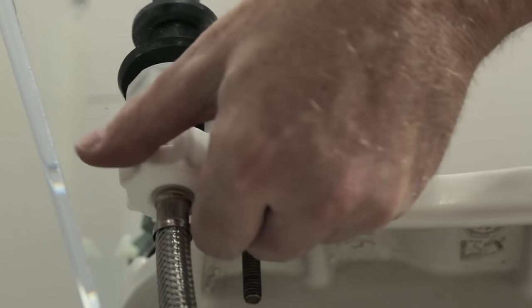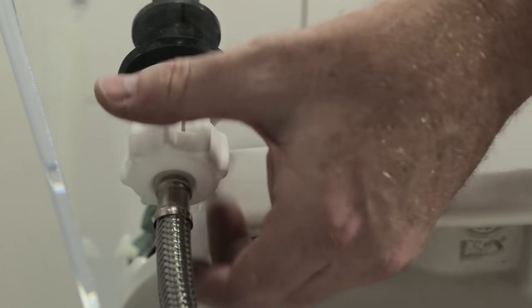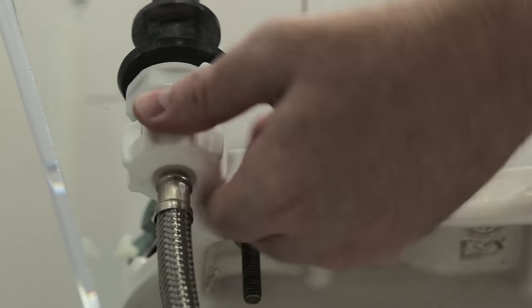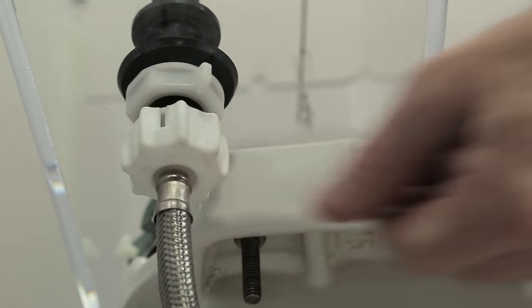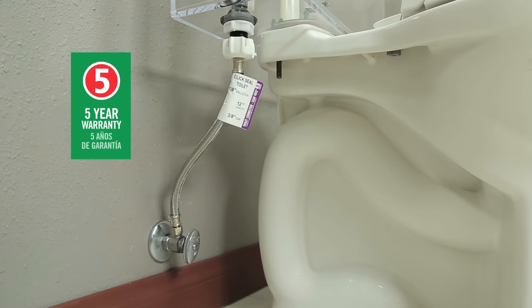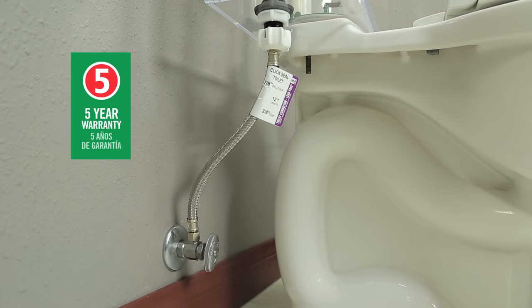Hand tighten the water supply connector to the fill valve. For ease of installation, consider using Fluid Master's Click Seal Toilet Connector. Simply hand tighten the connector nut until it clicks. The click lets you know it's sealed. Using the Click Seal connector will ensure that you never over tighten the nut. Be sure to replace all toilet connectors every five years to prevent water damage.